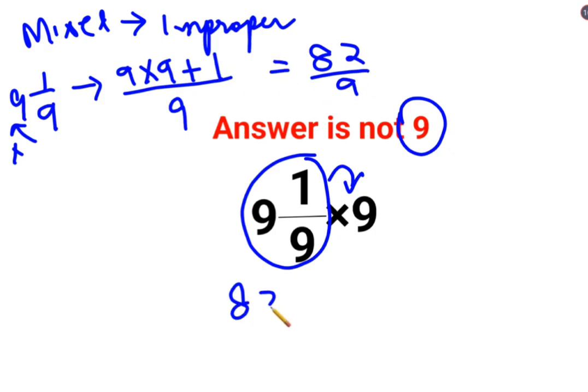So now we have 82 multiplied by 9, upon 9 multiplied by 9. So this gets cancelled. So now the answer for this question is supposed to be 82.